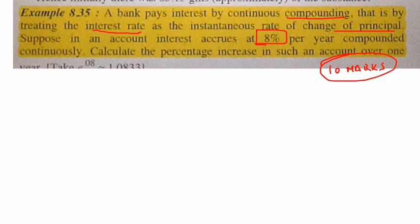The interest is compounded at the rate of 8%. So now let's assume that A is the principal, the principal or the amount you have invested into that bank.